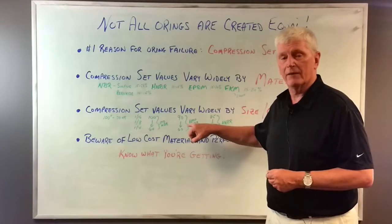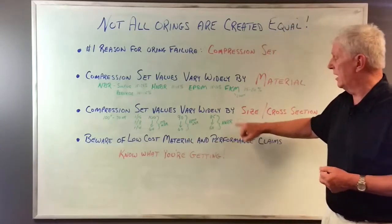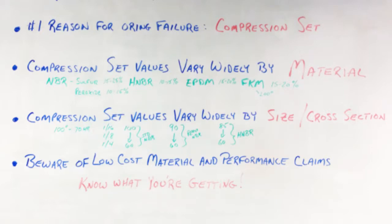Now, that 10 points can make a difference of sealing and not sealing. HNBR, again, a little bit better improvement, 85 to 60, 85 being the thin cross-section.